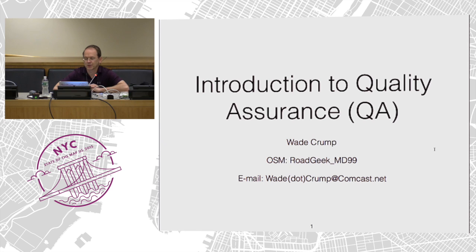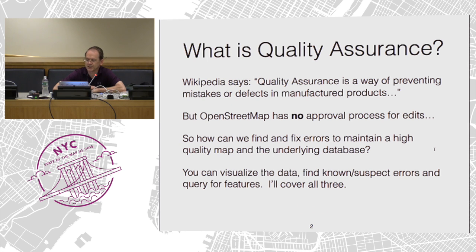So what is quality assurance? Wikipedia says quality assurance is a way of preventing mistakes in manufactured products, but we're really not manufacturing a product and we have no approval process. So how can we find and fix errors and maintain high quality data and maps? We can visualize the data, find known and suspect errors and warnings — I'll use errors and warnings interchangeably — and we can query for features. I'll go through all three of those.